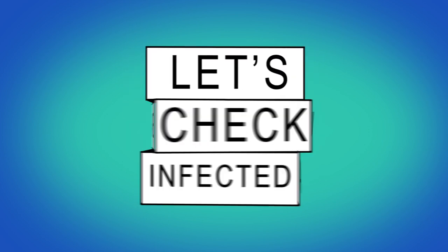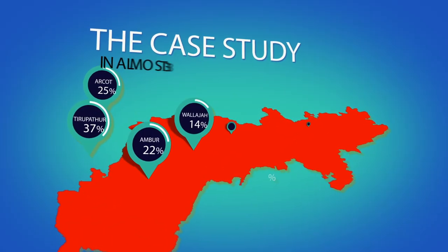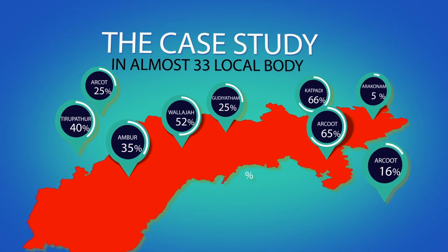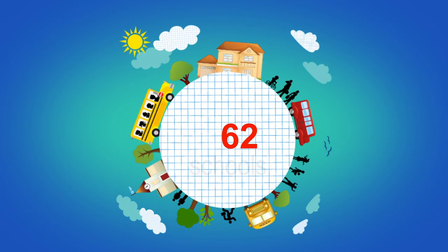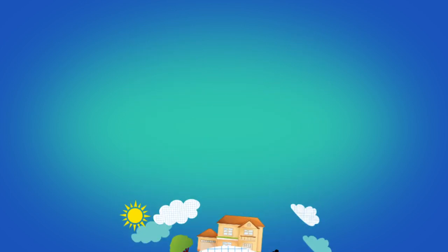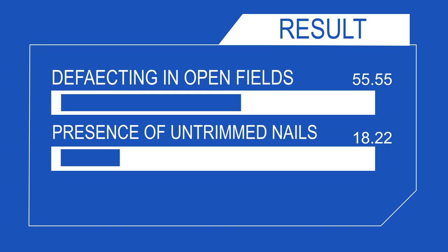A case study was conducted by CMC Villor in the districts of Villor and Tiruvannamalai. Children going to government and government-aided schools were screened for STH. The results showed a prevalence of STH of 7.8%. Based on further research on those 7.8%, the following conclusions were drawn.